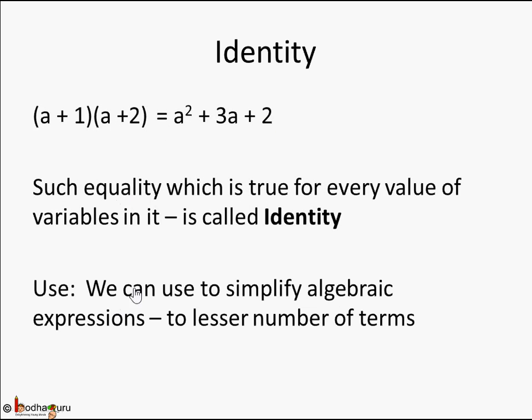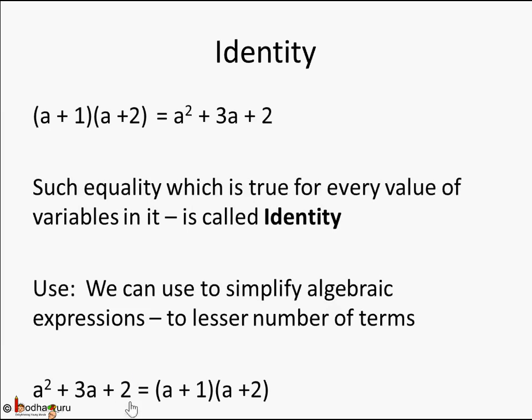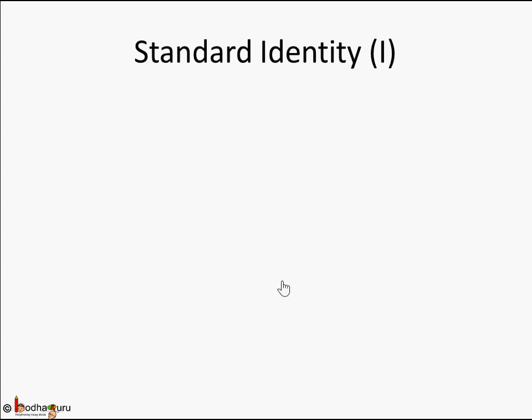So what is the use of it? We can simplify algebraic expressions to a lesser number of terms. For example, if you know this kind of rule, you can write the three-term expression a² + 3a + 2 in one term as two factors: (a + 1)(a + 2). That is the use of identity — to simplify algebraic expressions. Later on you will learn about factorization where this identity will be used heavily.